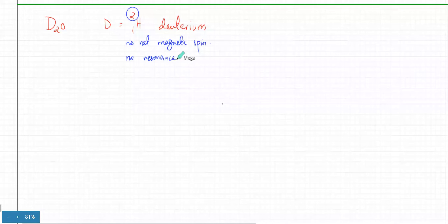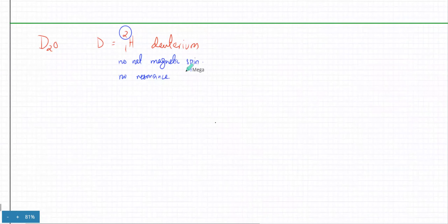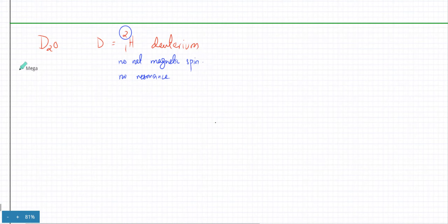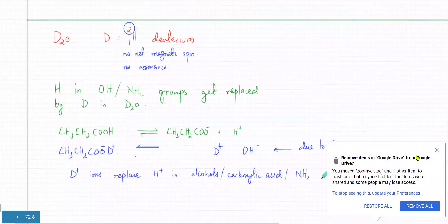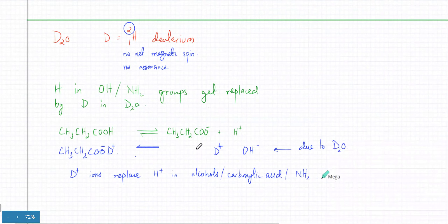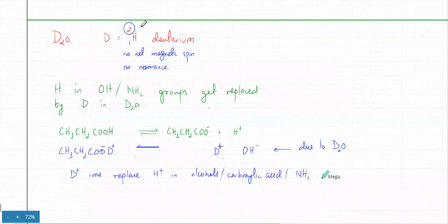Overall, it doesn't have a magnetic field, so it's not going to have any resonance. To restate: D2O is heavy water. Deuterium is an isotope of hydrogen. It has two nucleons — they will be paired, there would be no net magnetic spin, so there's no resonance. It's not going to resonate because it has no magnetic field.